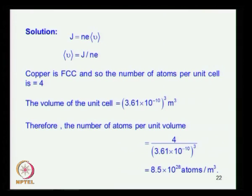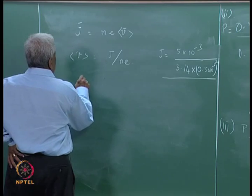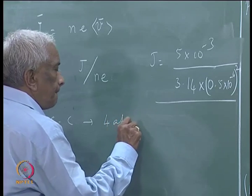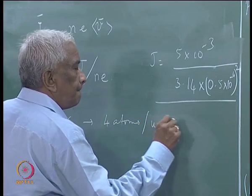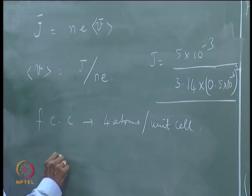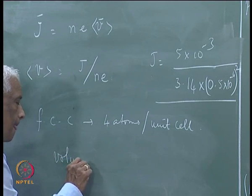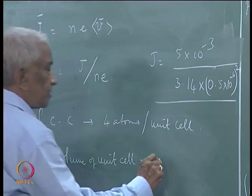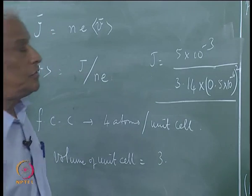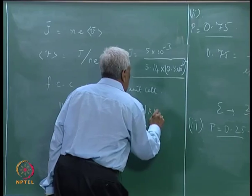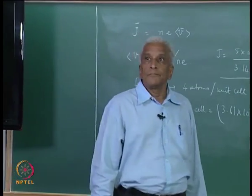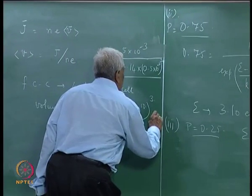We also know from the fact that it has a unit cell which is face-centered cubic, therefore there are 4 atoms per unit cell. The unit cell volume can be calculated from the given lattice parameter which is 3.61. So, this is 3.61 into 10 to the power minus 10 cubed, that is the volume in meter cube.